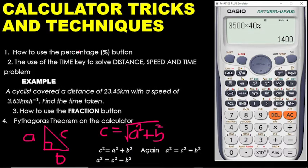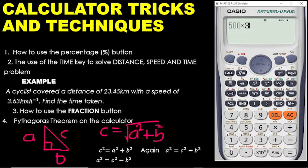Let's also calculate 30% of 500. We have 500, then multiply by 30, then go for shift and the percentage sign, press equals. The 30% of 500 — you are getting the answer. This is so easy, and that is one trick we want to draw your attention to.